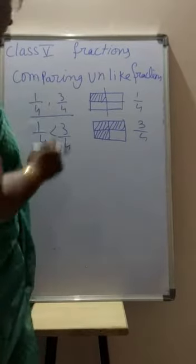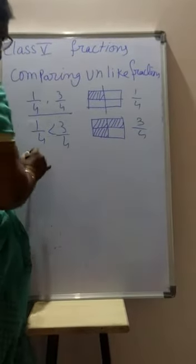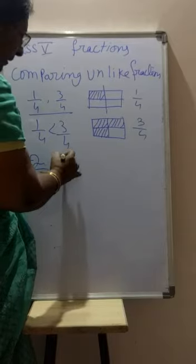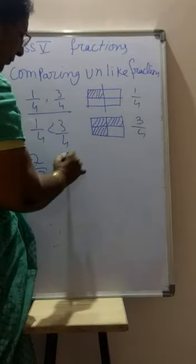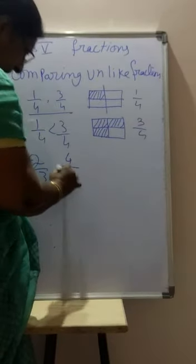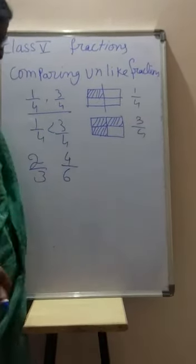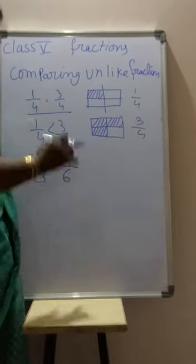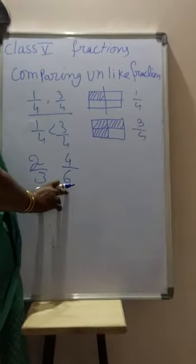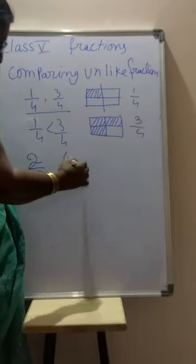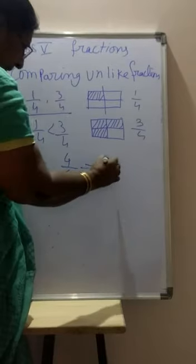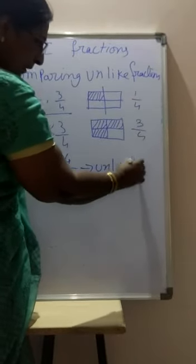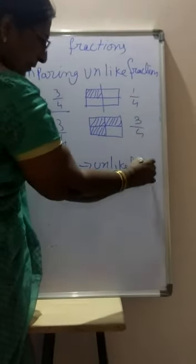Like fractions are easy, but what about unlike fractions? What are unlike fractions? For example, 2 by 3 and 4 by 6. Both denominators are different — these are called unlike fractions.